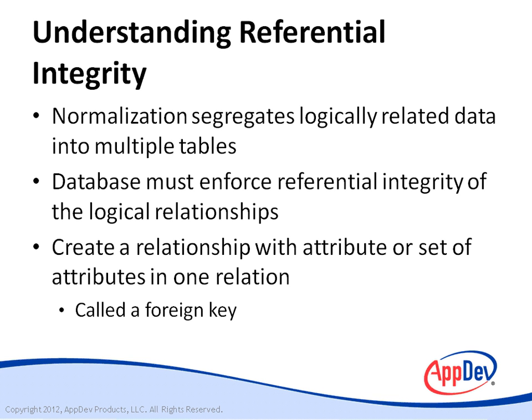For example, each row in the enrollment table has a foreign key column, student ID, which contains a value that also exists in the primary key student ID column in the student table. You can allow foreign key columns to contain null values, but any non-null values have to match primary key values in the related table.